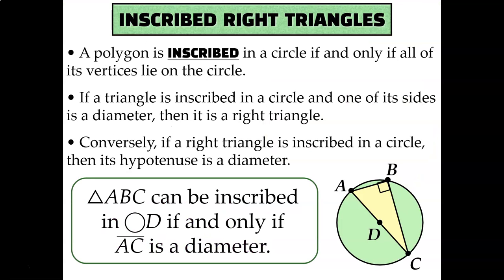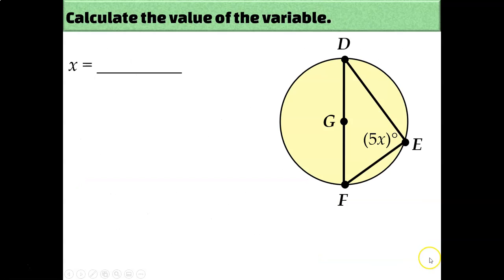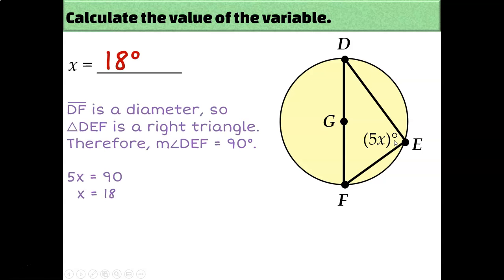What we've learned is that in order to inscribe a right triangle in a circle, the hypotenuse must be a diameter. Or conversely, if a triangle is inscribed in a circle and one of its sides is a diameter, then one of the angles must be a right angle. Let's put that knowledge to use. Given this triangle inscribed in circle G where one of the three sides is a diameter, that guarantees it's a right triangle and angle E is 90 degrees. So I can set 5x equal to 90 and find that x must be 18.